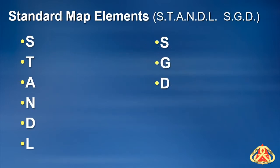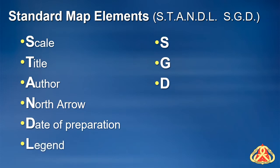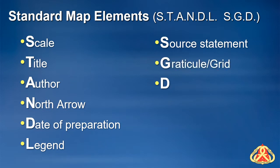Standard map elements include: Scale, Title, Author, North Arrow, Date of Preparation, Legend, Source Statement, Graticule Grid, and Data.